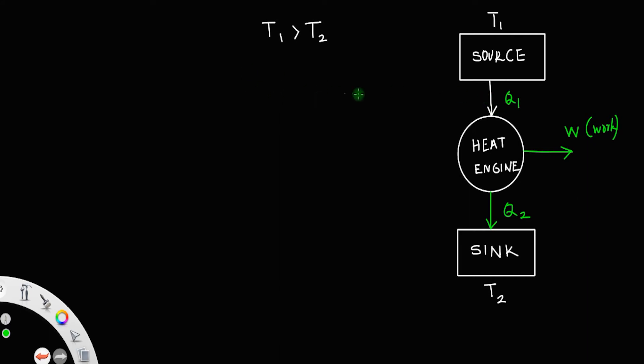Suppose if this heat engine takes 50 joules of heat from the source, then let 20 joules be the work done by the heat engine, then the rest, 30 joules, it will emit or reject to the sink. So, this is the way a heat engine works.